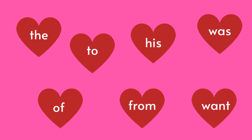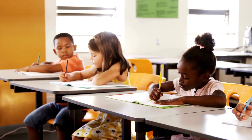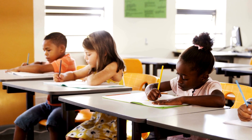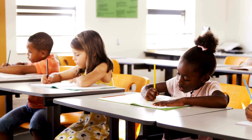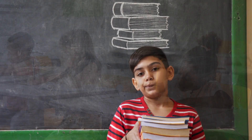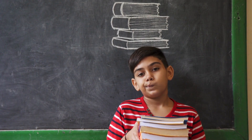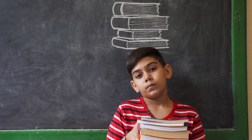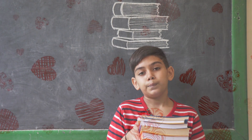Heart words are high-frequency words like 'the,' 'to,' 'his,' 'was,' 'of,' 'from,' and 'want.' These 100 or so words count for about 50% of the words we read and spell, and many of these words can be very tricky to learn to read and spell. The tricky part of the word is the reason these words are called heart words.